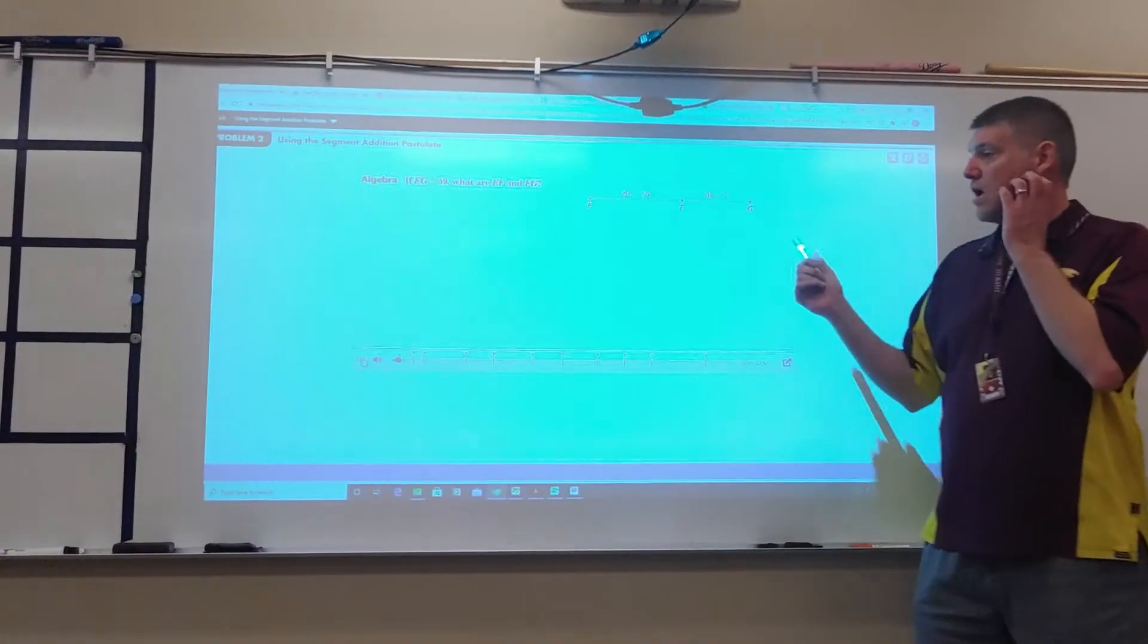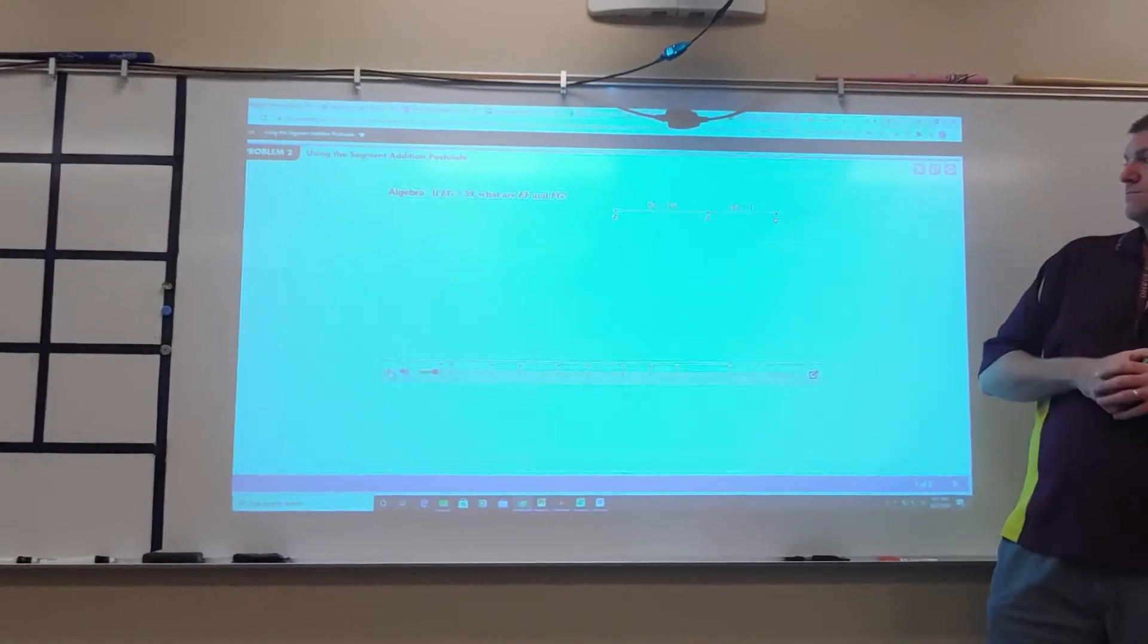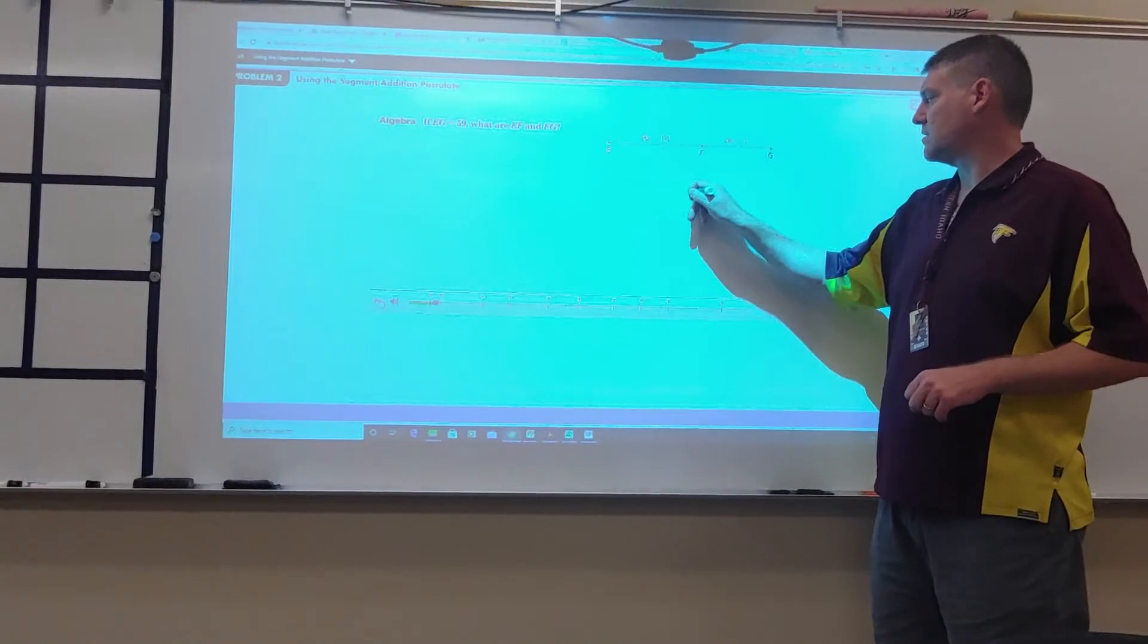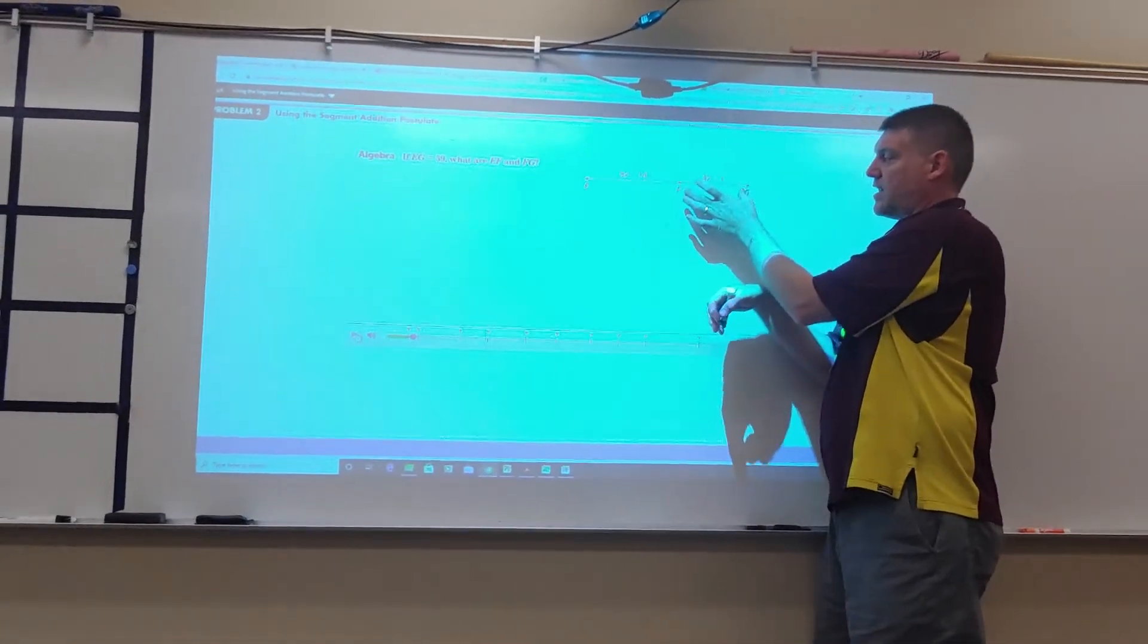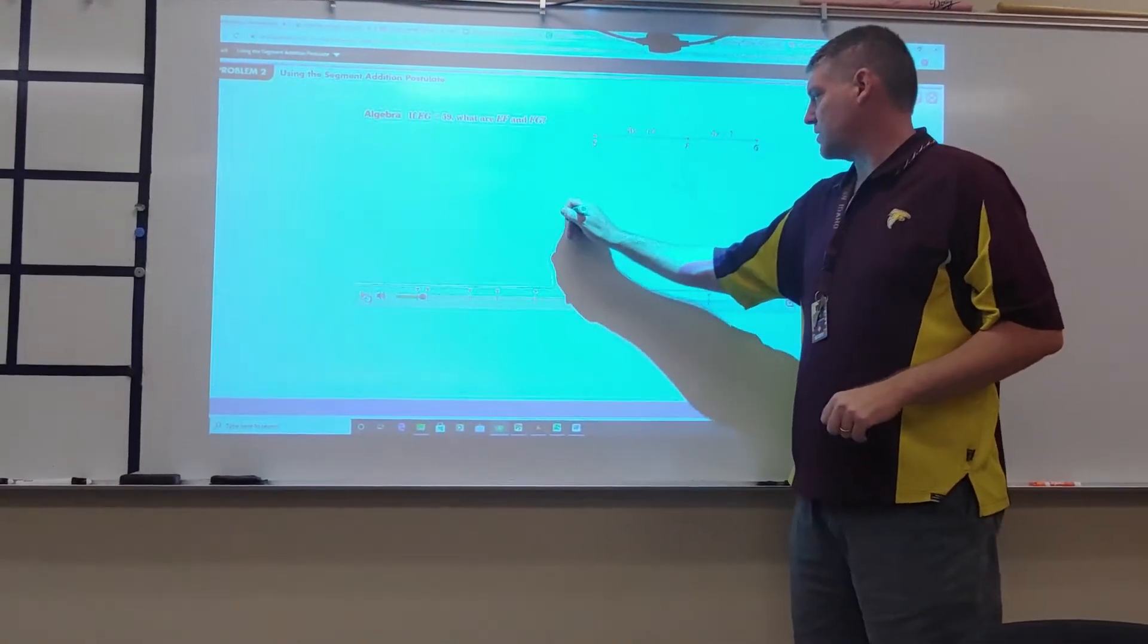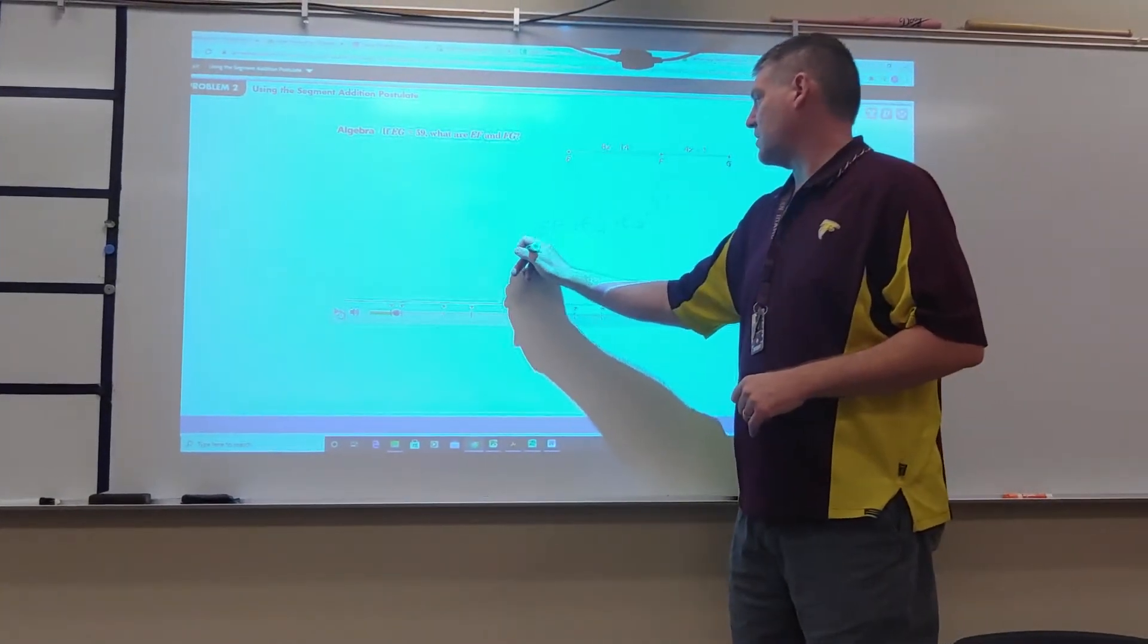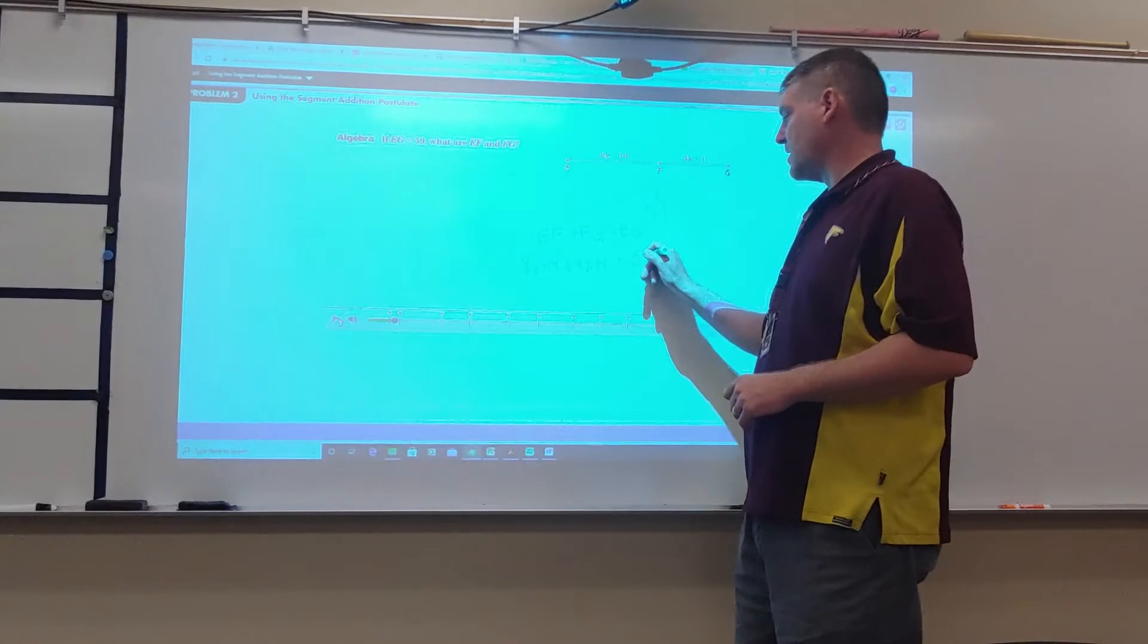If the length of segment EG equals 59, what are the lengths of segment EF and segment FG? We're looking at this whole thing here - we said this whole thing is 59. Notice that each of these is part of it. EF and FG are part of this 59. So we're going to add these together. We're going to say EF plus FG equals EG. I know all these parts. So this is going to be 8X minus 14 plus 4X plus 1 equals 59. Now this is algebra, back to algebra 1.